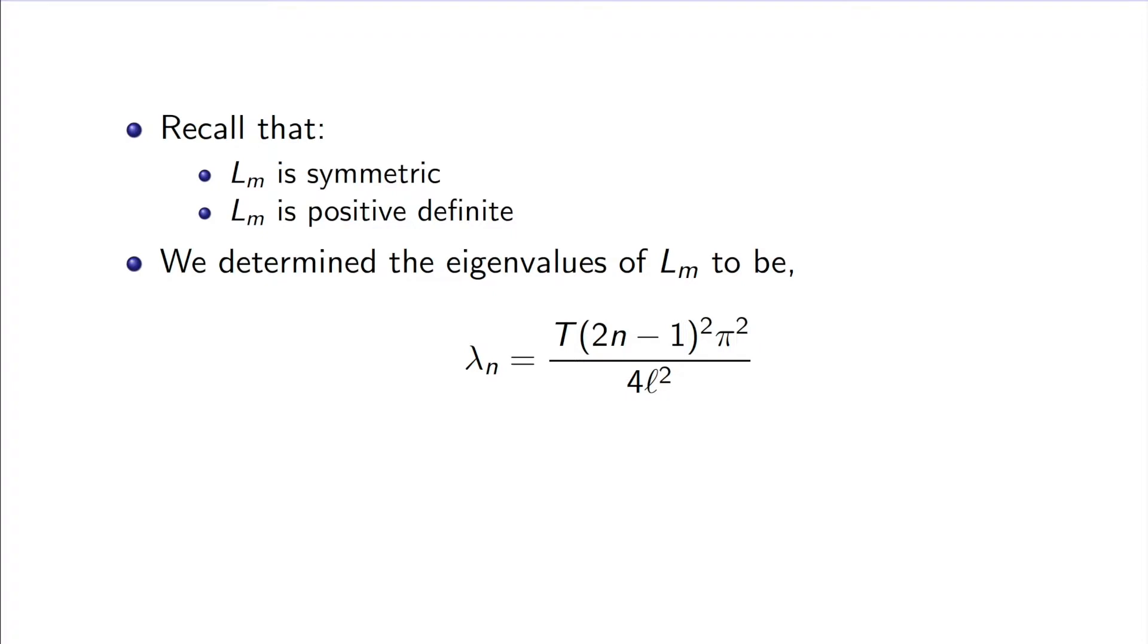Previously, we have determined that the eigenvalues of Lm will be t times (2n minus 1) squared pi squared all over 4l squared. In addition, we figured out that the eigenvectors or eigenfunctions of this problem will be sine of (2n minus 1) pi x over 2l.